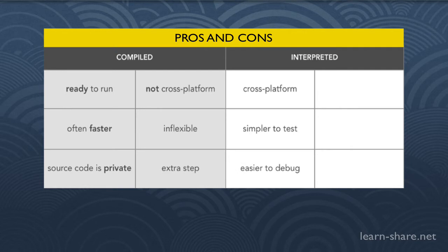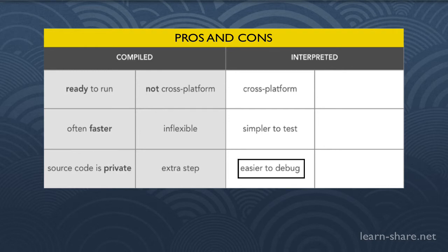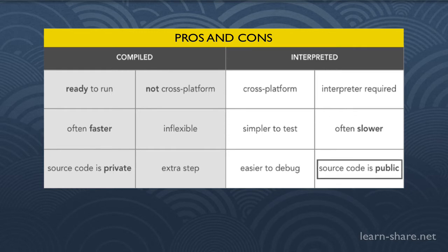With an interpreted language, they are cross-platform because you don't provide machine code — you just send the source code and let the other side take care of it. It's more portable, easier to test across platforms since you just write the source code and run it, letting the interpreter convert it. It's also easier to debug because you always have access to the source code. On the downside, everyone who needs to run your program has to have an interpreter for that language. It can also be slower because you have to interpret every time the program runs, and the source code is public.